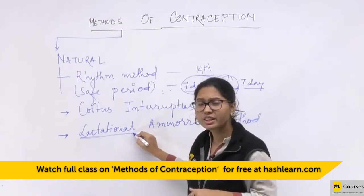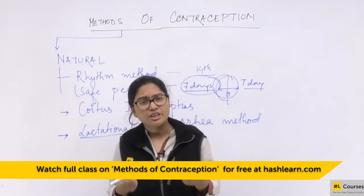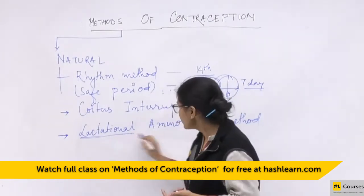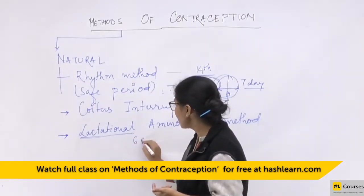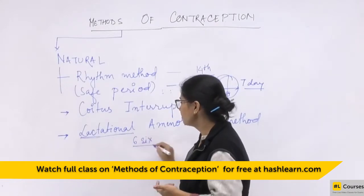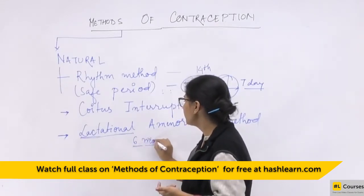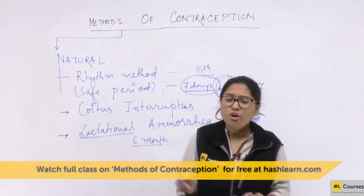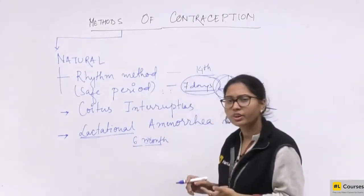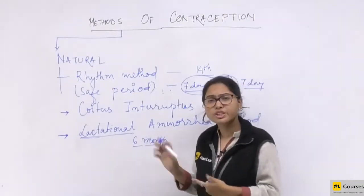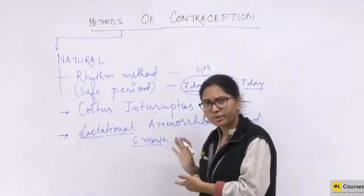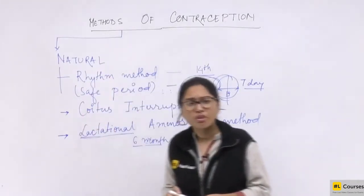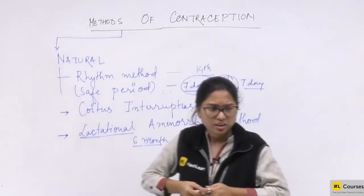During intense lactation, there is no ovulation. If there is no ovulation, there is no menstrual cycle. This period can be maximum six months after parturition. Since there is no ovulation and no menstrual cycle, there is no possibility of pregnancy. These are the natural methods of contraception.